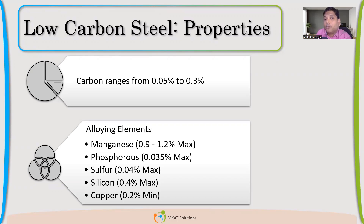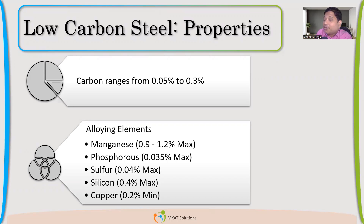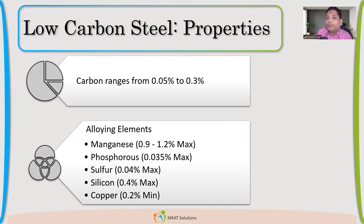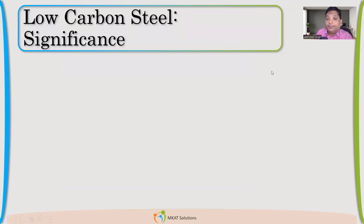Silicon is also a deoxidizing element like manganese — it kills oxygen and also increases strength. Copper improves corrosion resistance; since copper itself is highly corrosion resistant, adding it to steel improves atmospheric corrosion resistance. The most important thing to remember is the carbon percentage: 0.05 to 0.3.